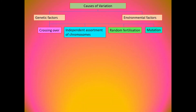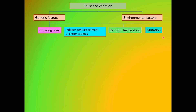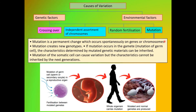Factor number three: random fertilizations. Fertilization between sperm and secondary oocyte is random. Genetic recombination, which occurs during crossing over and random arrangements of homologous chromosomes in meiosis, produces gametes with different genetic content from their parents. Therefore, a diploid zygote produced after fertilization will have new genetic combinations. Mutations are a permanent change which occurs spontaneously on genes or chromosomes, creating new genotypes. If mutations occur in the gametes, the characteristics determined by the mutated genetic material can be inherited.